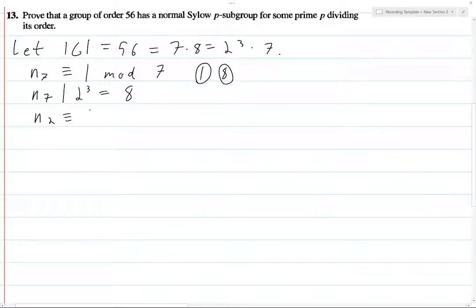For N₂, N₂ is equivalent to 1 mod 2 and N₂ divides 7. By the way, the reasons I circled 1 and 8 here means that there's either 1 Sylow 7 subgroup or 8 Sylow 7 subgroups. Those are the only options. So for N₂, we have N₂ divide 7. So let's see, we've got 1, 3, 5, and 7. And so 1 and 7 are the possible numbers of Sylow 2 subgroups.